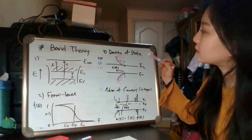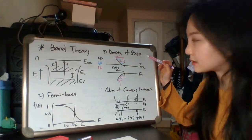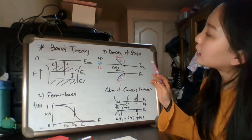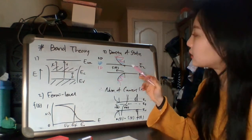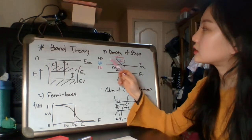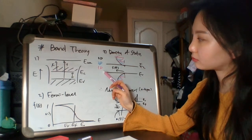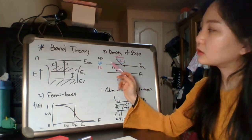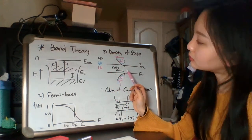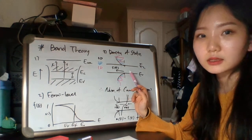Third is density of states we call DOS. I draw three functions in this graph. Black one is 3D, blue is 2D, and red one is 1D. 3D function is general, so I'll talk about this case.